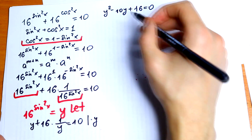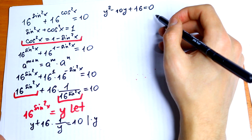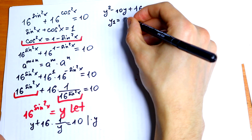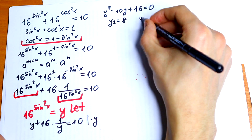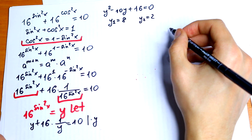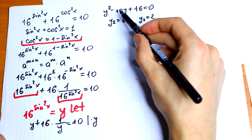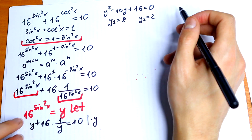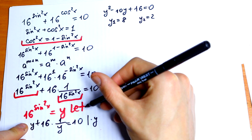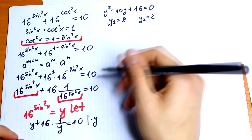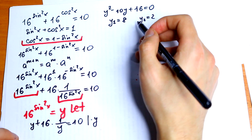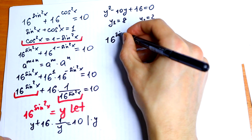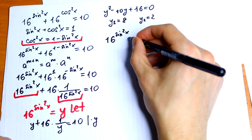We have a classic quadratic equation. The roots are y₁ = 8 and y₂ = 2 — their sum equals 10 and product equals 16. Having made the substitution, we now need to solve two equations. The first: 16 to the power sine squared of x equals 8.